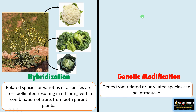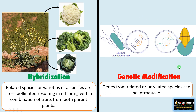Whereas in genetic modification, genes from related or unrelated species can be introduced. For example, in disease-resistant BT corn, the gene for disease resistance comes from Bacillus thuringiensis, a bacterium which has a gene called cry gene that produces a protein called cry protein that is insecticidal. That gene is transferred to the corn so that the corn starts producing cry protein, making this corn insect resistant. Any gene, even from unrelated organisms, can be transferred in genetic modification.